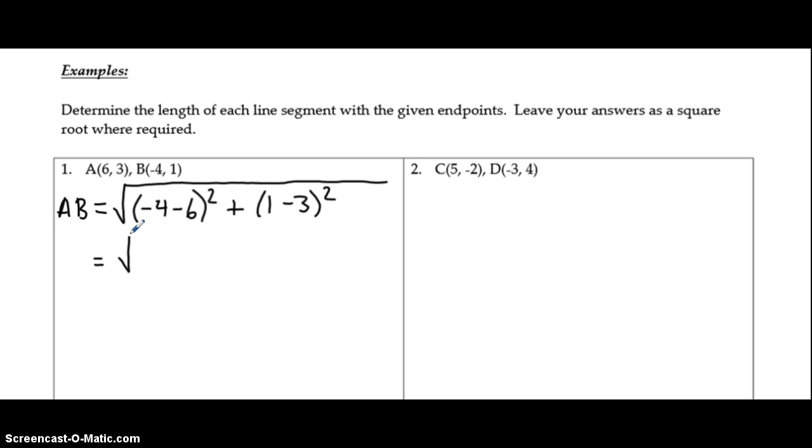And drop down here. So I'm going to start by simplifying that first set of brackets. So negative 4 minus 6 gives me negative 10 squared, and 1 minus 3 gives me negative 2 also squared.